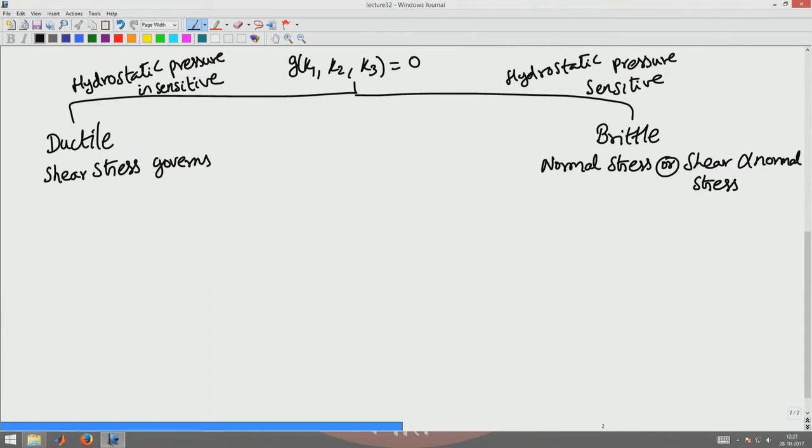Now, a given material need not always behave in a ductile manner or in a brittle manner. This is again temperature dependent. A given material in certain range of temperatures may be ductile and certain lower range of temperatures may behave in a brittle manner. It is not that steel is always ductile and glass is always brittle. You have to understand that.